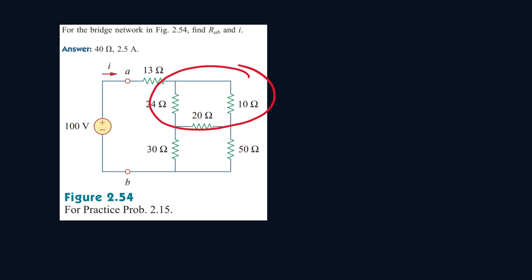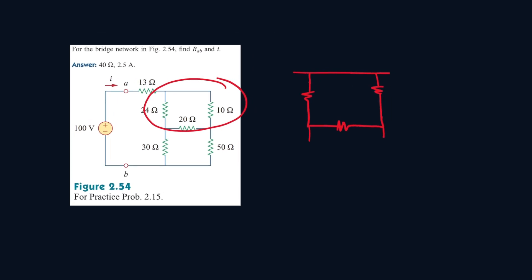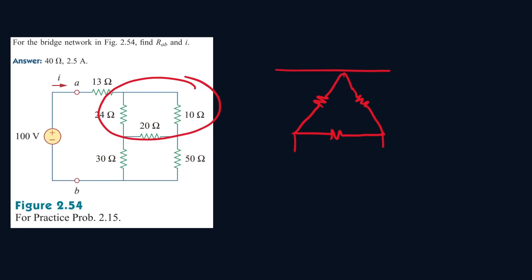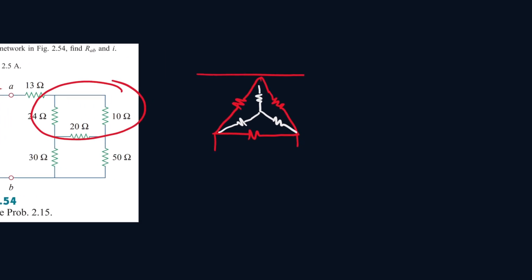Let's work with this portion. Notice the top is the same node, so that means we can connect these two portions together. Now notice that we can make a little Y here — we can turn this triangle circuit into this Y-looking circuit. But it won't have the same values; it'll have completely different values, so we have to find out how to find these new values.